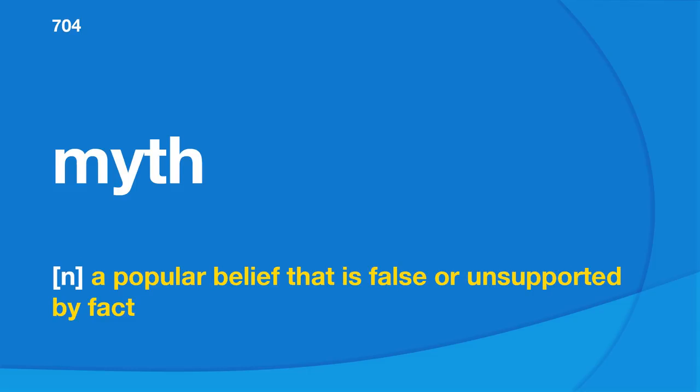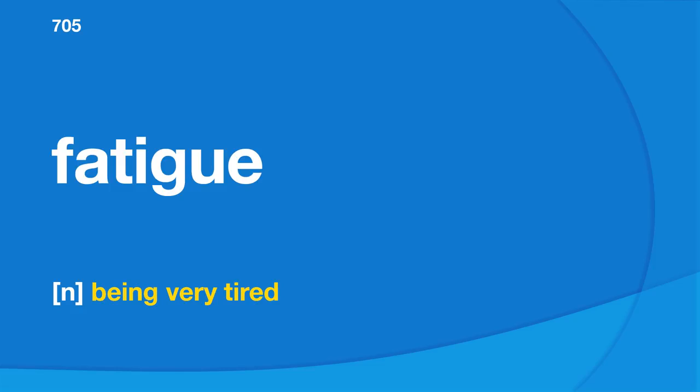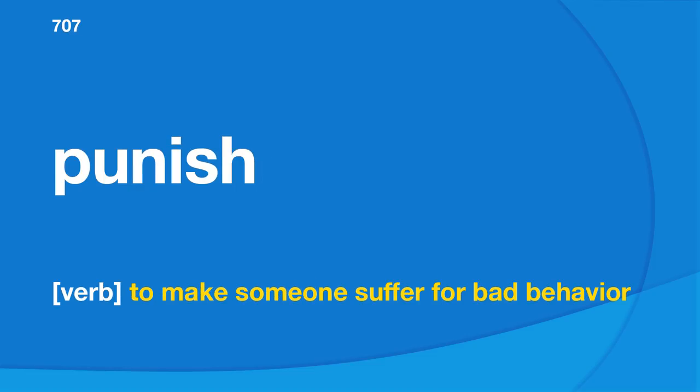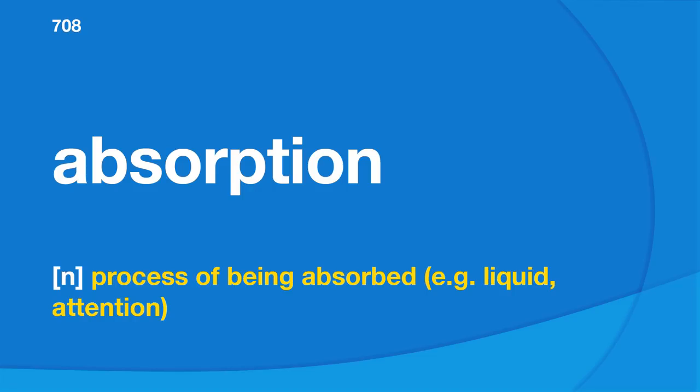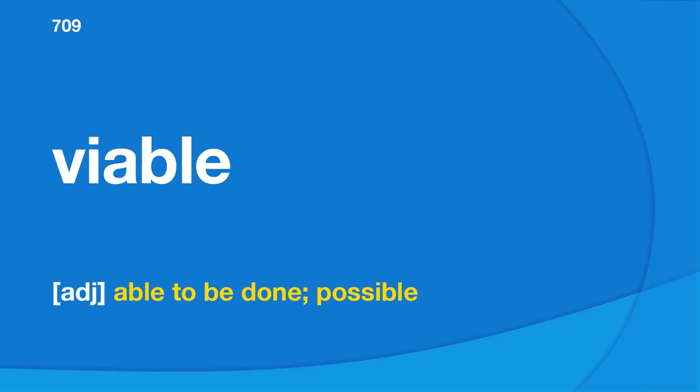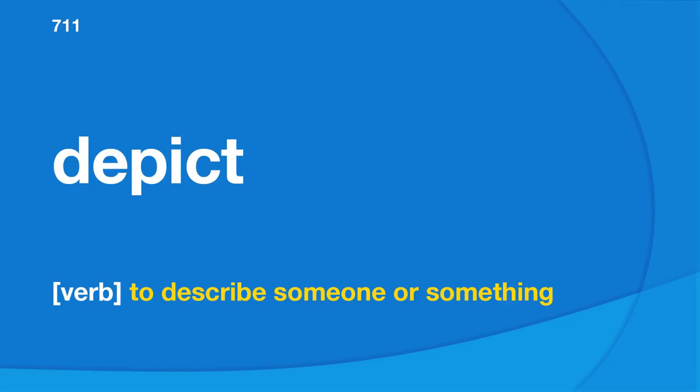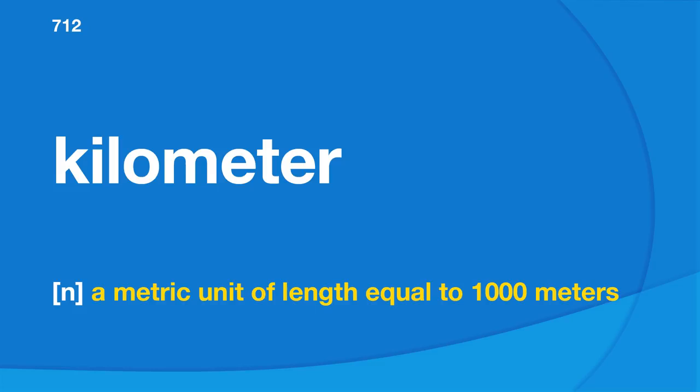Confound: to confuse and greatly surprise someone so that they are unable to explain a situation. Auction: to sell to a person offering the highest price. Contour: the shape of the outside edge of something. Myth: a popular belief that is false or unsupported by fact. Fatigue: being very tired. Implicit: not stated directly. Punish: to make someone suffer for bad behavior. Absorption: process of being absorbed.